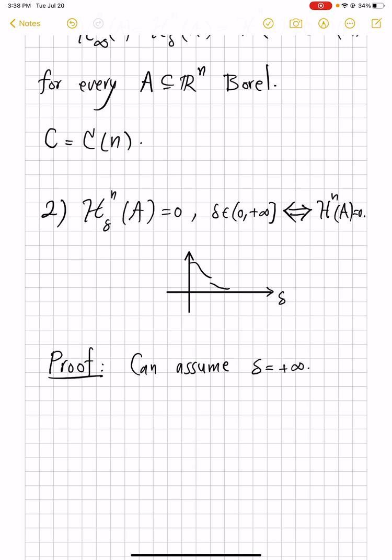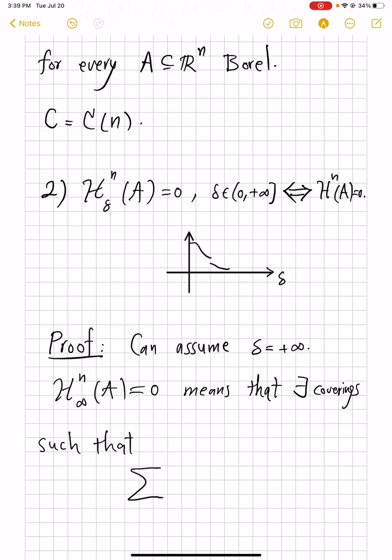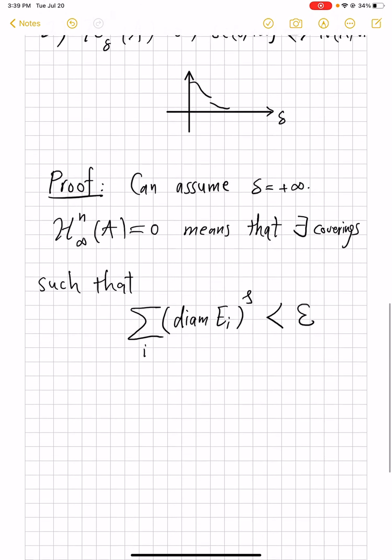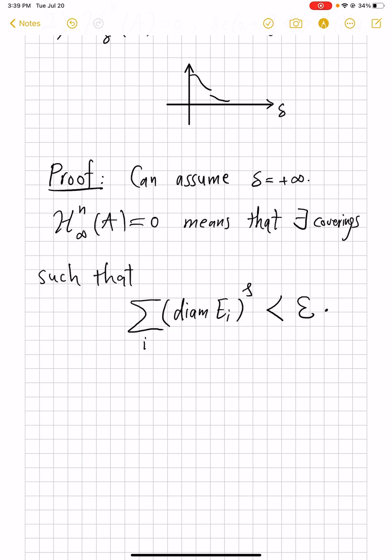Then, by H^s_∞ of A being zero means that we can find coverings, that there exist coverings such that summation diameter E_i to power s is arbitrarily small. So, let's say less than ε. We do not begin by saying that the diameters of the sets E_i are less than anything, but because of this inequality, so it follows that diameters of each one of these E_i's are no bigger than δ, which is ε to power 1 over s.